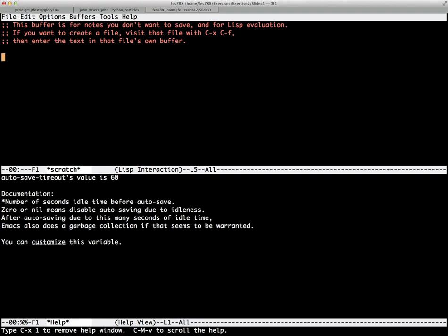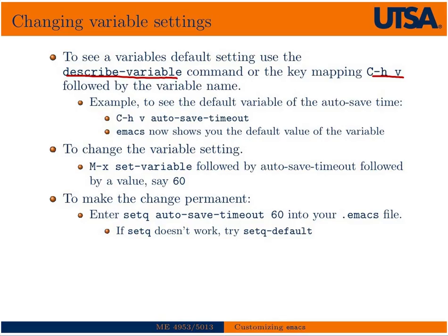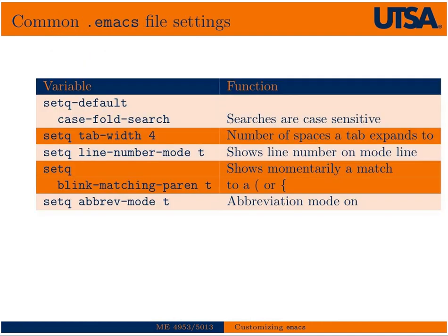Once you decide on a set of default values you like, you can put these in your .emacs file with the setq command. There's also a command setq-default. I'll just say that if you try setq and it doesn't seem to work, then try setq-default. Here are a couple of common things you might want to have in your .emacs file. I'll leave it to Google to find the rest because there's just too many to list, but I just want to make you aware of how you can go about changing these.